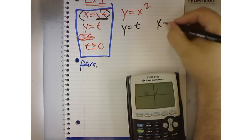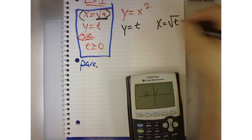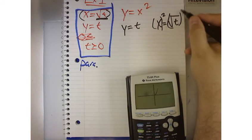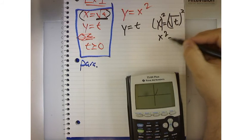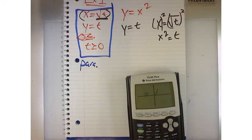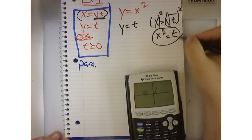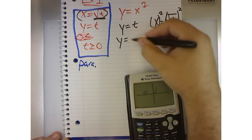So, if I say x is equal to the square root of t, and I square this side, and I square this side, then I get x squared is equal to t. Because t is really y. But t is y, so then, if I plug this in for t, I get y equals x squared.